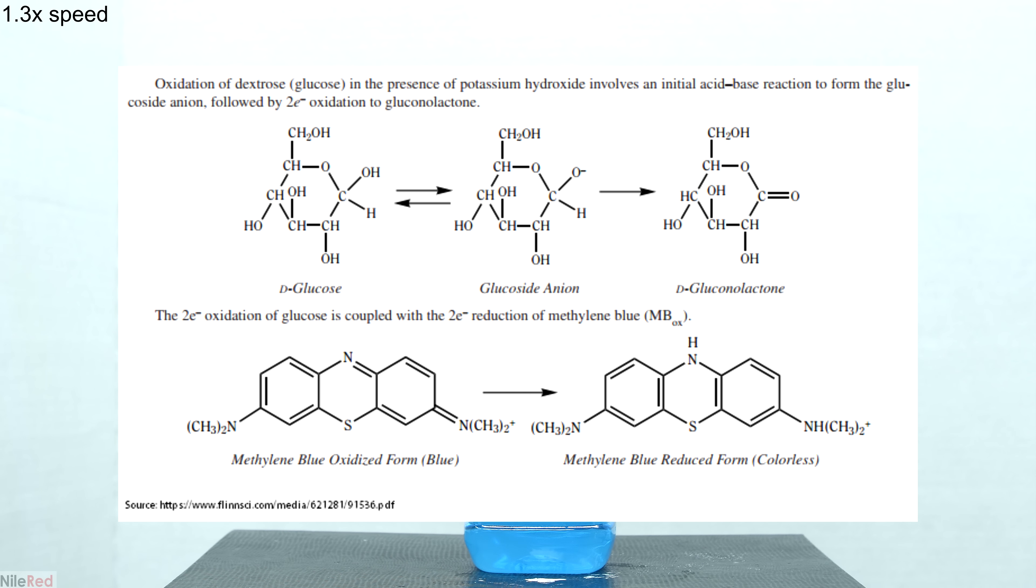In our case here the molecule that receives the electrons is methylene blue in its colored form. When it receives the electrons that are given up by the sugar it becomes reduced and the reduced form of methylene blue is colorless.